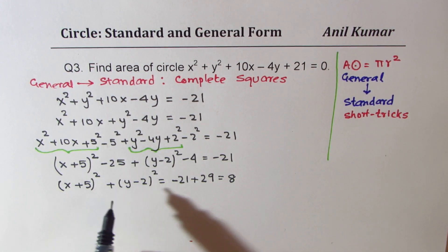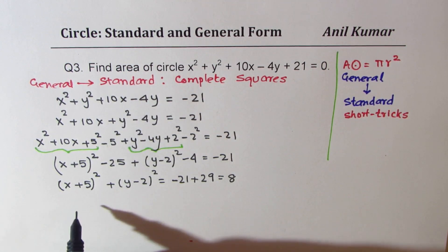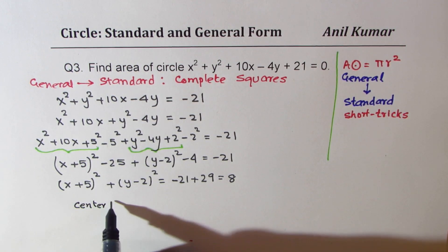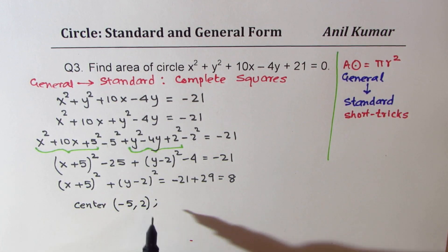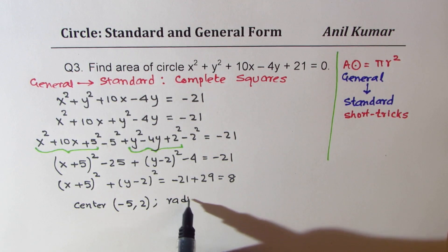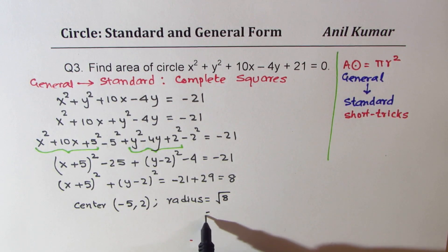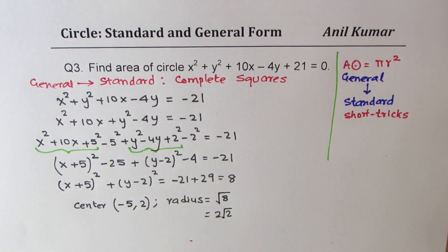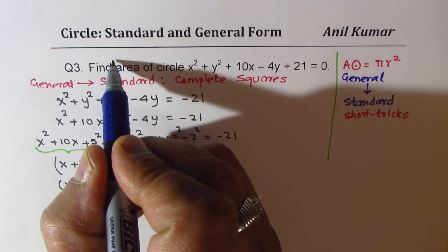We now have the equation in standard form. The center of the circle is at (-5, 2) and the radius is √8, which can be written as 2√2. Now we can find the area.